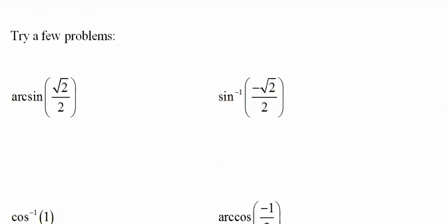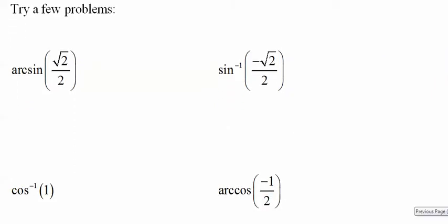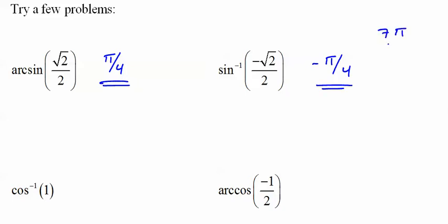Try these. Don't read 'arcsine root 2 over 2' — read it as 'where does sine equal root 2 over 2?' It's in the first quadrant: pi over 4. We cannot use the second quadrant because arcsine does not allow it. For sine inverse of negative root 2 over 2, the answer is negative pi over 4. We can't call it 7 pi over 4 because that's not in the interval negative pi over 2 to pi over 2.